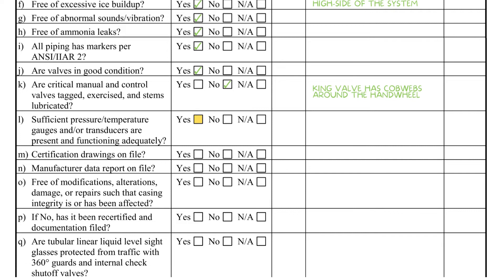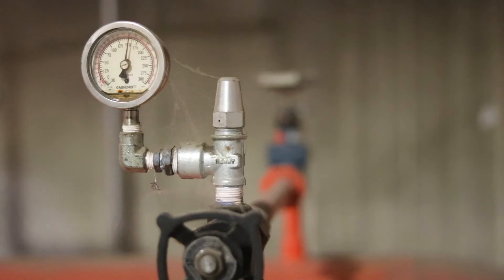The vessel must have sufficient instrumentation for monitoring the vessel operating conditions per item L in the checklist. For most situations, a pressure gauge is sufficient to satisfy this requirement.